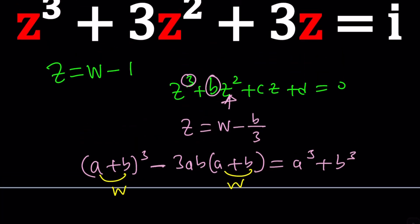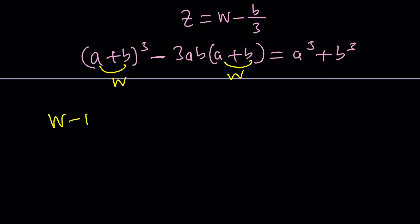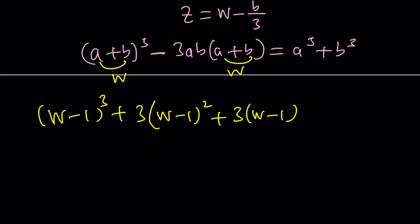So let's go ahead and replace z with w minus 1: w minus 1 cubed plus 3 times w minus 1 squared plus 3 times w minus 1 equals i. Okay good. Let's go ahead and simplify this as much as possible. This one expression right here is going to be w cubed minus 3w squared plus 3w minus 1 and then we're going to get 3 times w squared minus 2w that will be minus 6w plus 1 is going to be a plus 3 and then plus 3w minus 3 equals i.